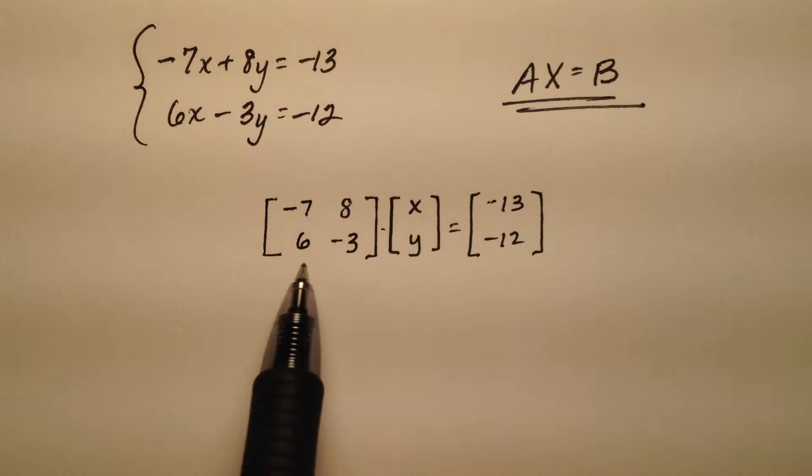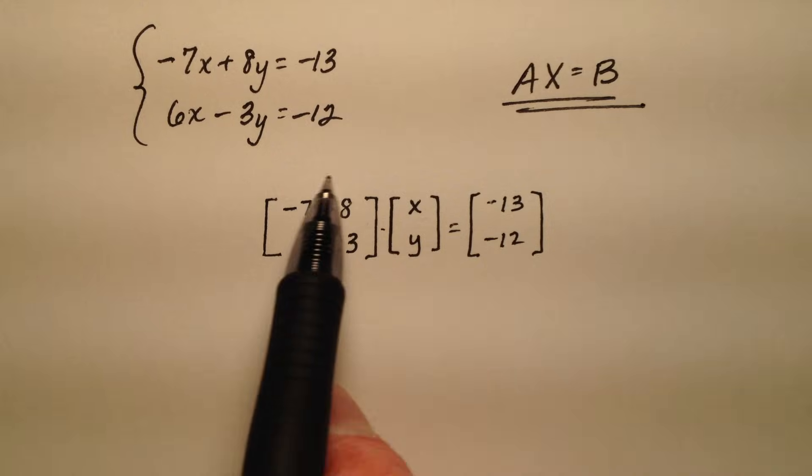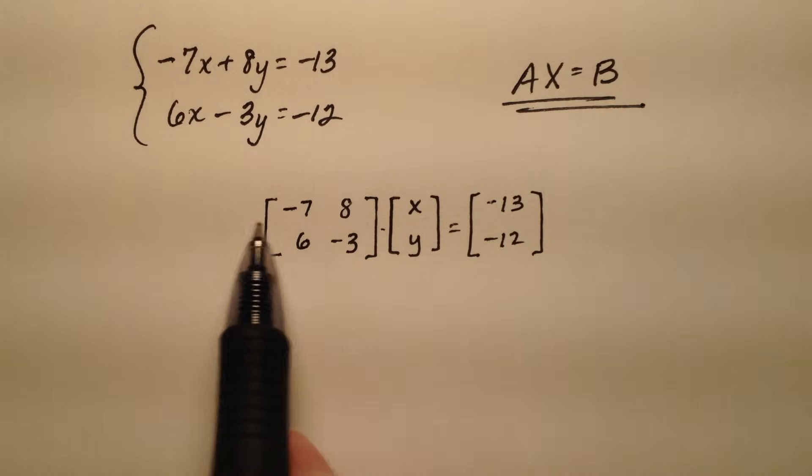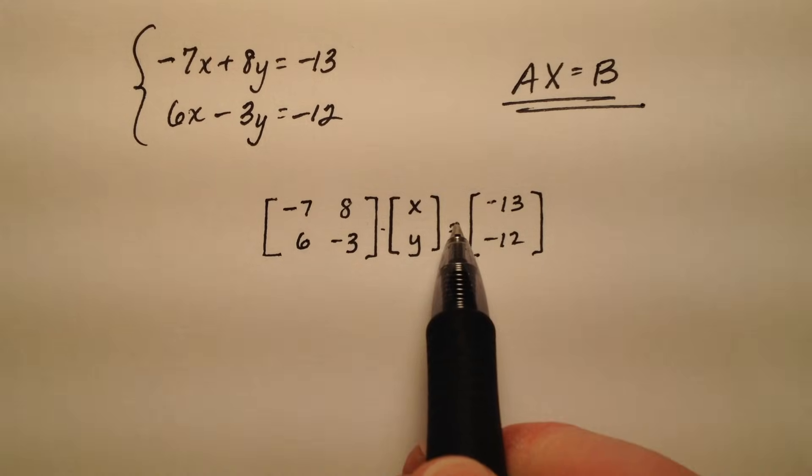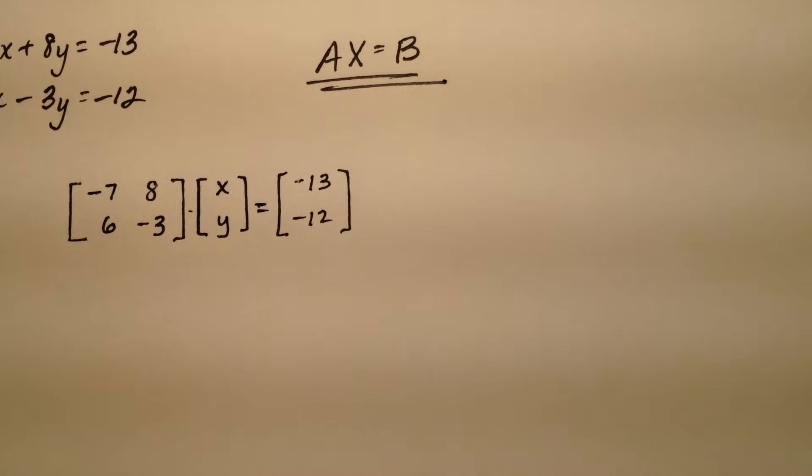So what I'm going to do now is find the inverse of this coefficient matrix and then multiply each side of this equation on the left by my inverse coefficient matrix. So let's go ahead and find that right now.